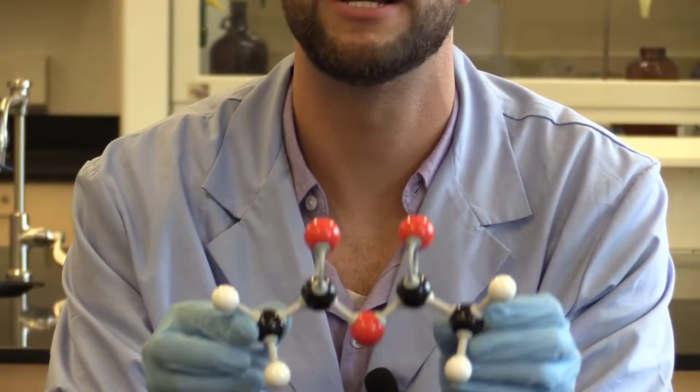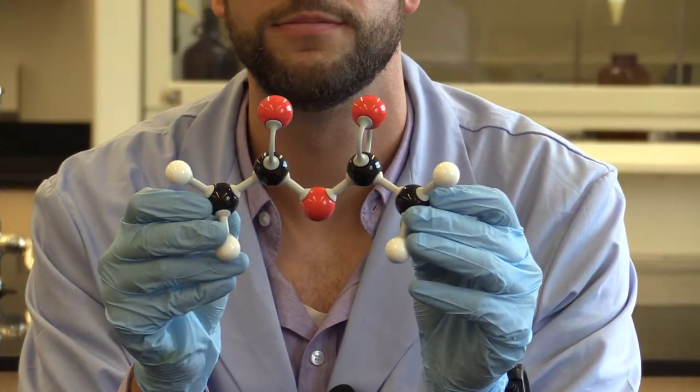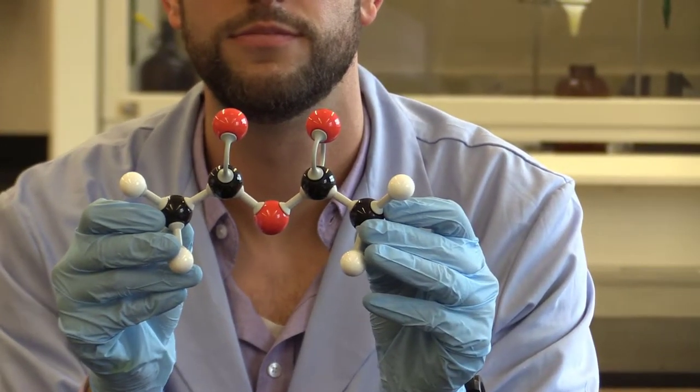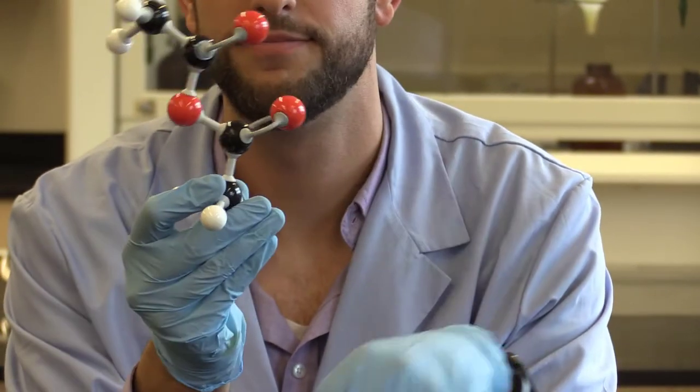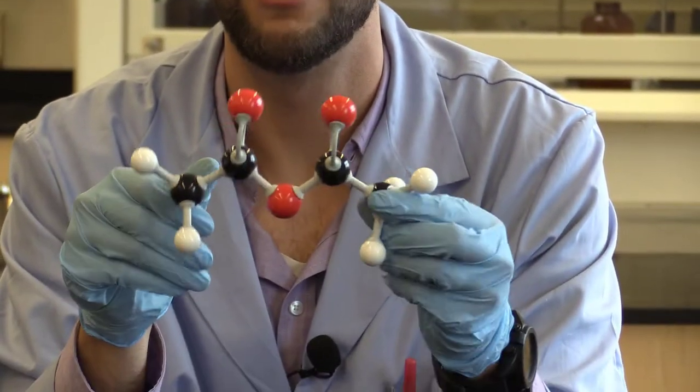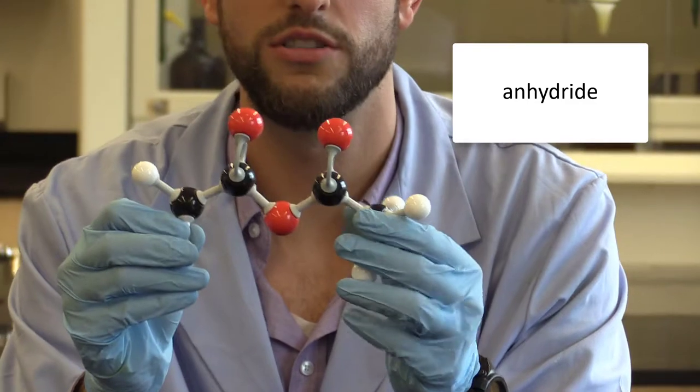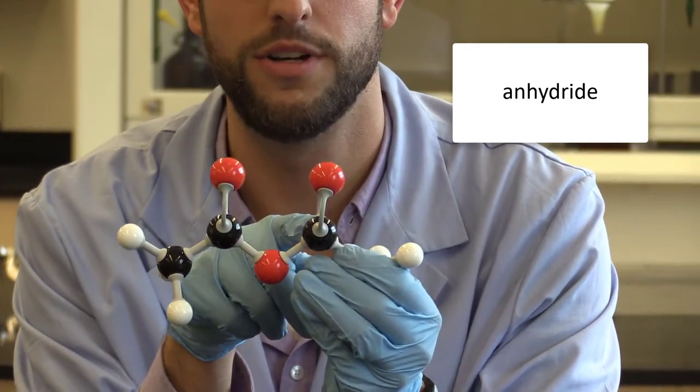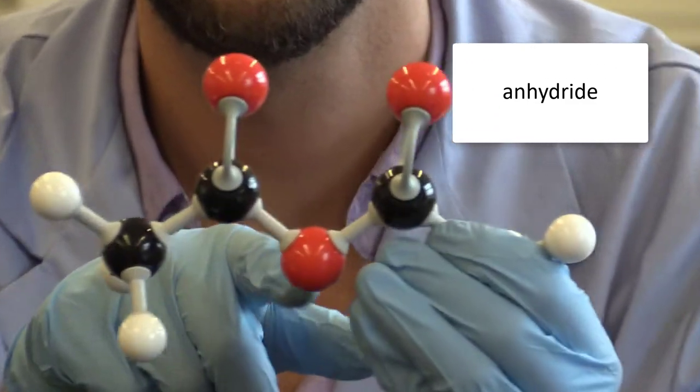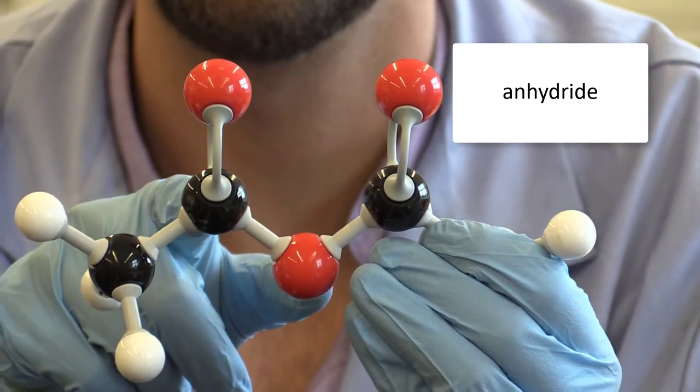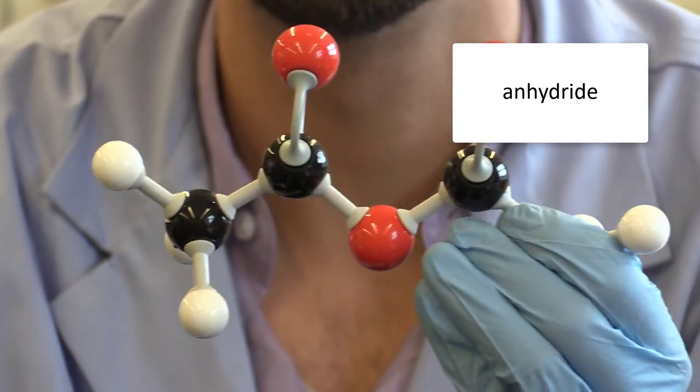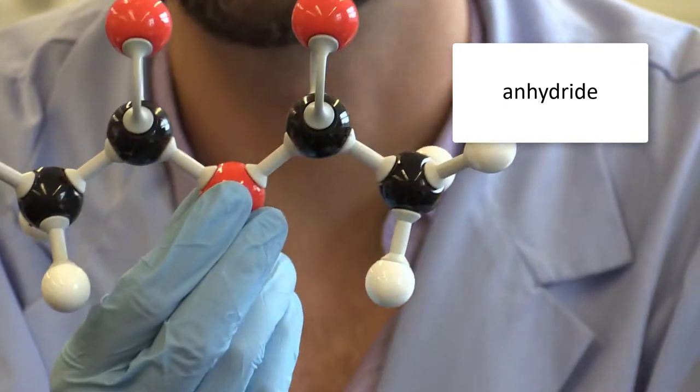Alright, our next structure. This guy is our anhydride being shown here. And we have a carbon double bonded to an oxygen. And then this carbon is bonded to an oxygen. And then this oxygen is bonded to another carbon that is then also double bonded to an oxygen.